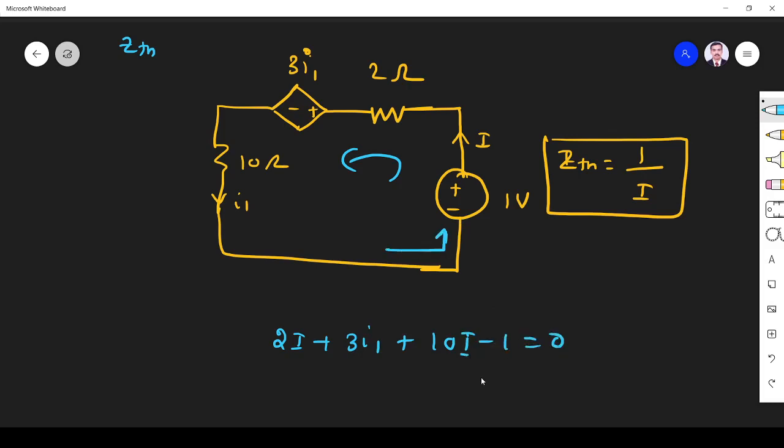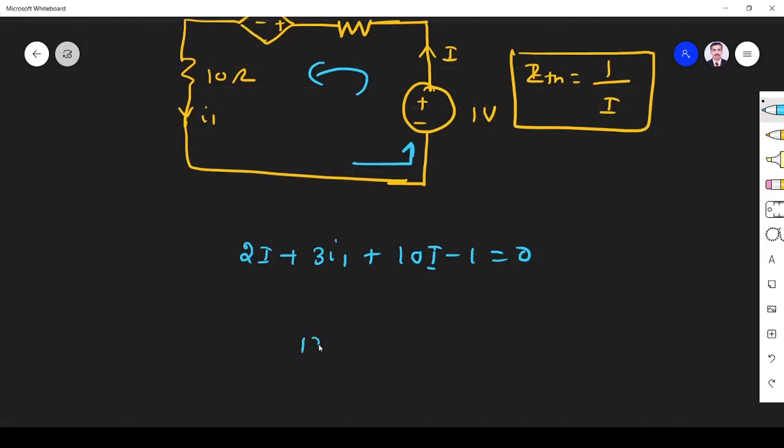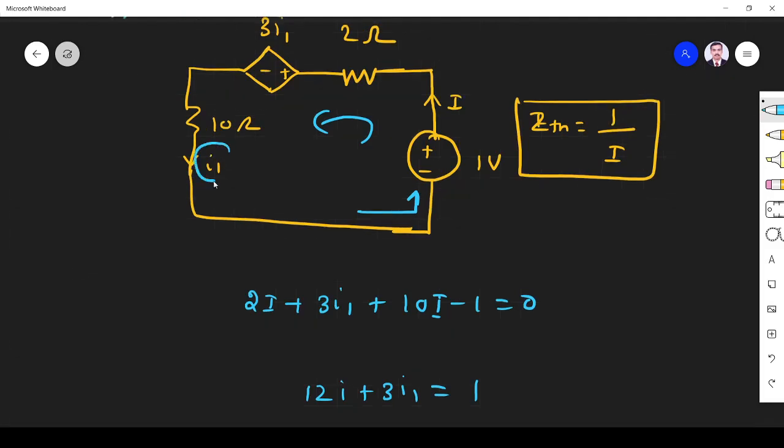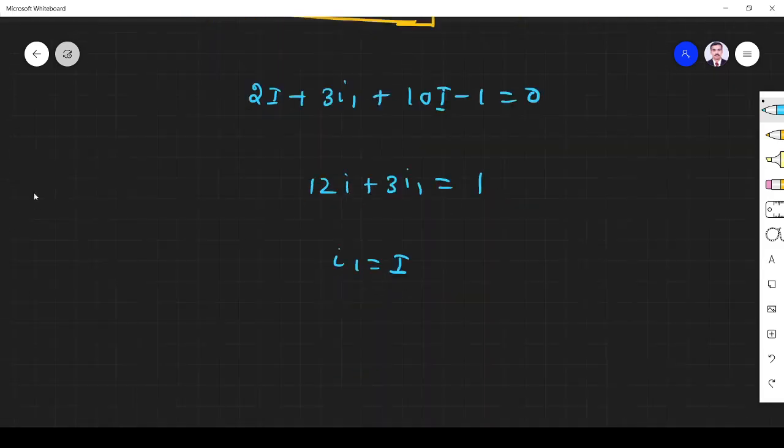Equal to 0, so it is 12i plus 3i1 equal to 1. From this diagram we understand i1 and i are same - same current flows through this 10 ohm, so we understand i1 is equal to i.